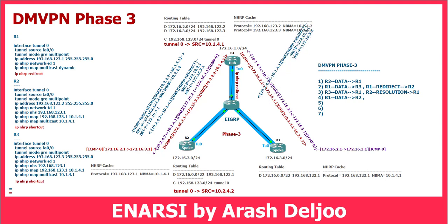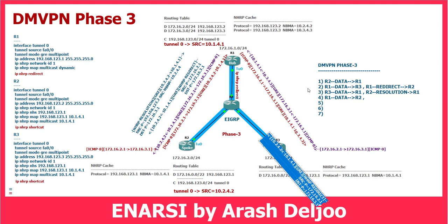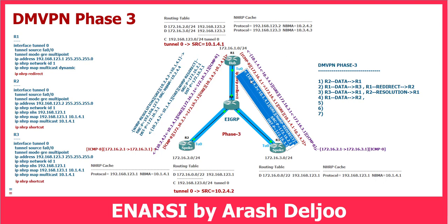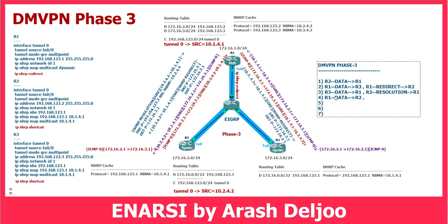I want to show you what is happening with NHRP redirect. We are sending this NHRP redirect from Router 1 to Router 3 because we want to inform R3 that you have a better path than R1. You can send traffic directly. This is the NHRP redirect. The source is 10.1.4.1, destination is 10.3.4.3. The source protocol IP is 172.16.3.1 and destination is 172.16.2.1 — you can forward it yourself from a better path to the destination, you don't need to give it to me. Because of that, besides forwarding the data to R2, R1 should send a redirect message to Router 3.